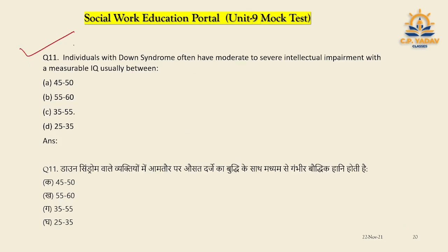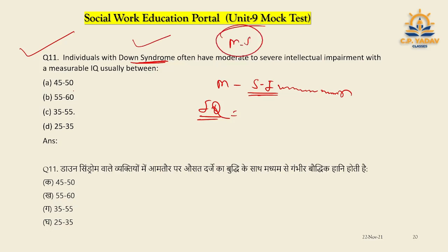Question number eleven: An individual has Down syndrome with moderate to severe intellectual impairment. What will their IQ level range be? Options are 45–50, 55–60, 35–55, and 25–35. The correct IQ range for moderate to severe intellectual impairment is C — 35 to 55.